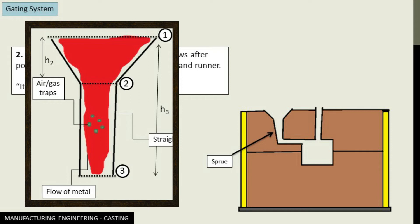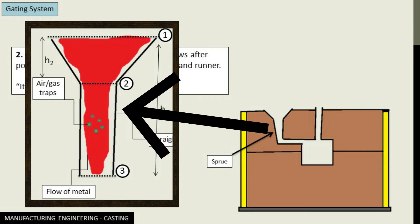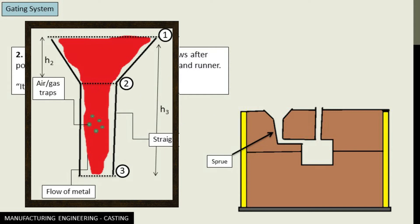The molten metal will try to flow in a conical way inside, leaving some space in the straight sprue or the straight passage. And these spaces will attract the air that is already inside or the gases of the mold that is already inside.